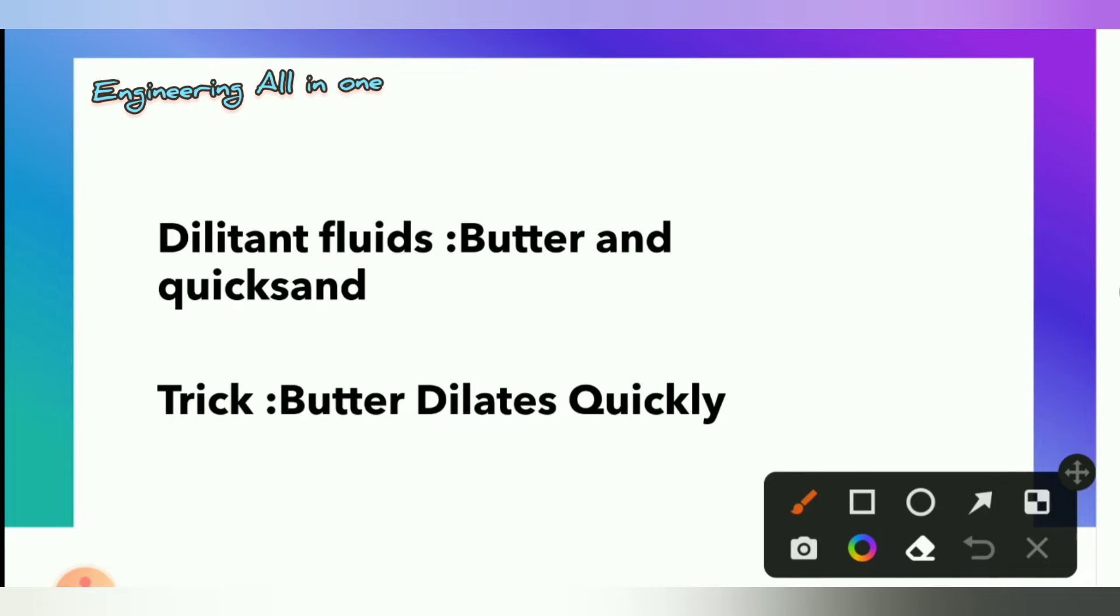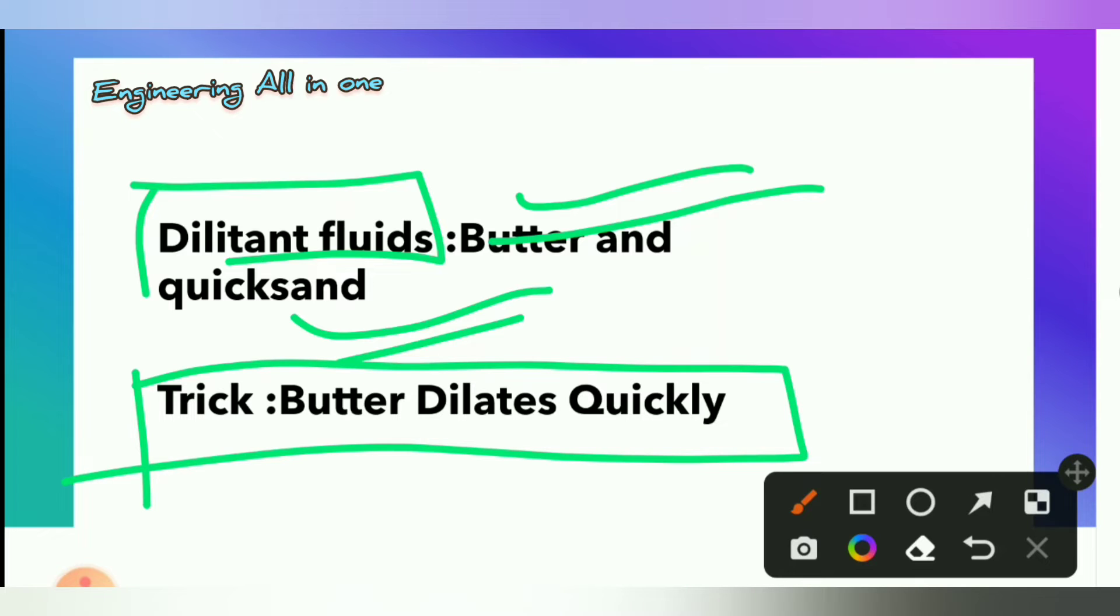First type of non-Newtonian fluid is dilatant fluid. Examples for this are butter and quicksand. How to remember? It becomes very difficult to remember the examples for these non-Newtonian fluids. So I have made a trick here.